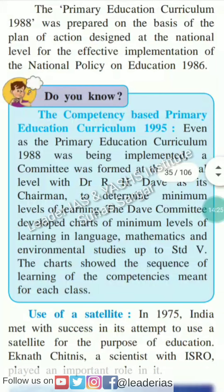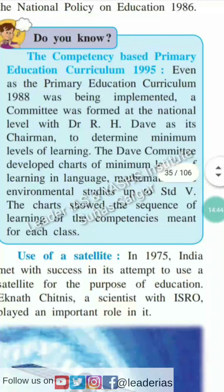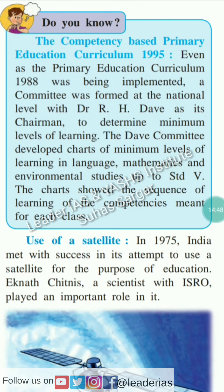The primary education curriculum in 1988 was prepared on the basis of a plan of action designed at the national level for the effective implementation of the National Policy on Education, 1986. The competency-based primary education curriculum, 1995: Even as the primary education curriculum 1988 was being implemented, a committee was formed at the national level with Dr. R.H. Dhawai as its chairman to determine minimum level of learning. The Dhawai committee developed charts of minimum level of learning in language, mathematics, and environmental studies up to standard five. The charts show the sequence of learning of the competencies meant for each class.